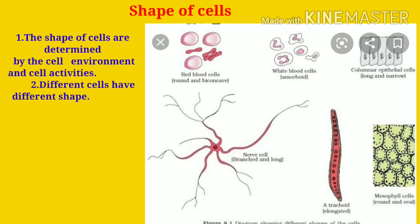What are the shapes of cells? The shape of cells is determined by cell environment and cell activities. Cells have different shapes: red blood cells are bi-concave, white blood cells are rounded or irregular, muscle cells are long and slender, nerve cells are branched and long, mesophyll cells are round and oval, and sclerenchyma fibers are elongated.